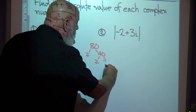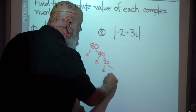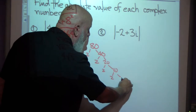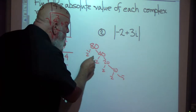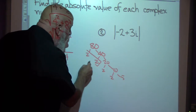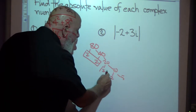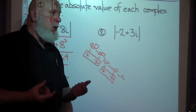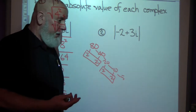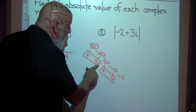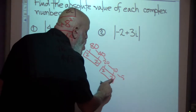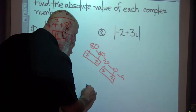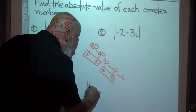2 goes into 40, 20 times. 2 goes into 20, 10 times. 2 goes into 10, 5 times. Here's a perfect square — and here's another perfect square. There's a rule that if you multiply two perfect squares together, you get a perfect square. So 2×2 is 4, and 4×4 is 16. You can think of 80 as 16 times 5.